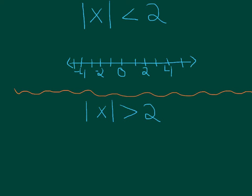Before we start, I want to look at two basic absolute value inequalities and think about what their graph would look like. This first one, absolute value of x is less than 2. So let's think about what values of x make this true. Well first, we need numbers that are less than 2, because 3 wouldn't work.